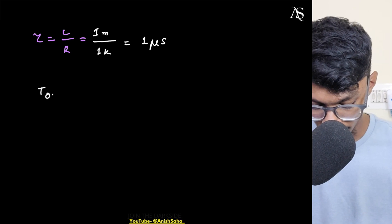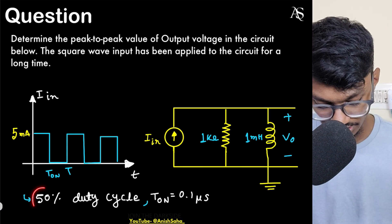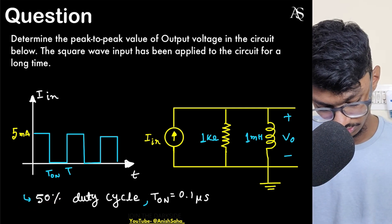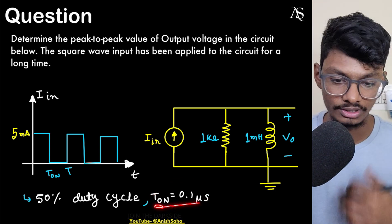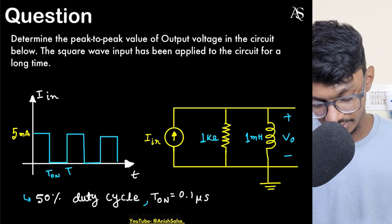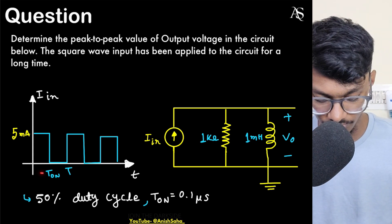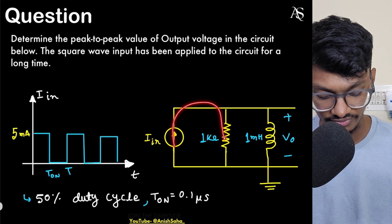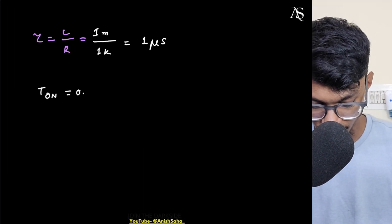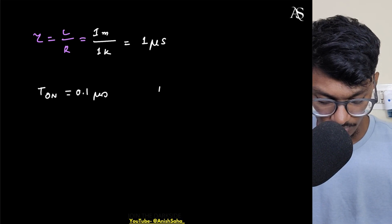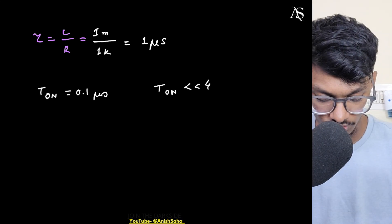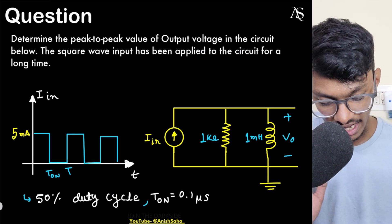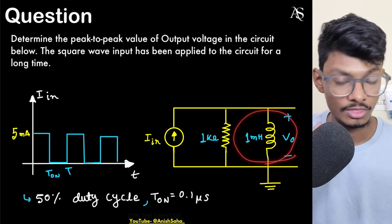Now let's compute T_on. With a 50% duty cycle, they've given T_on directly. The current source input equals 0.1 microseconds, so T_on is 0.1 µs. Since 4 tau is 4 microseconds, T_on is much much less than 4 tau. Therefore, the circuit does not have sufficient time to reach steady state.